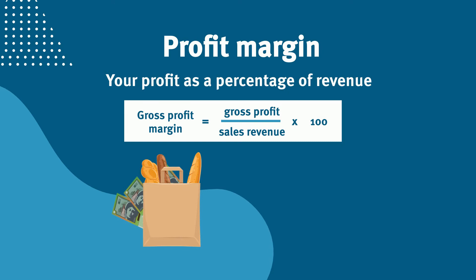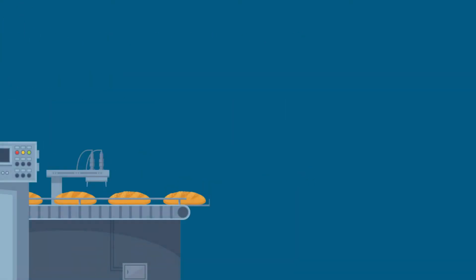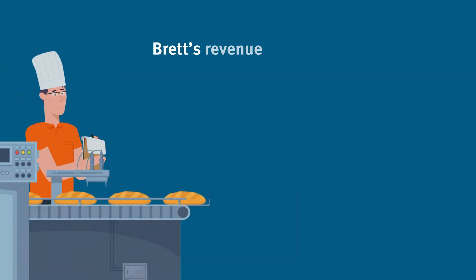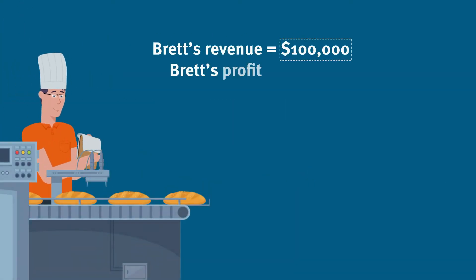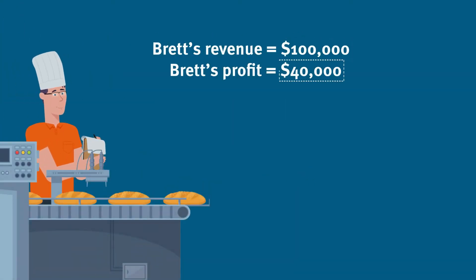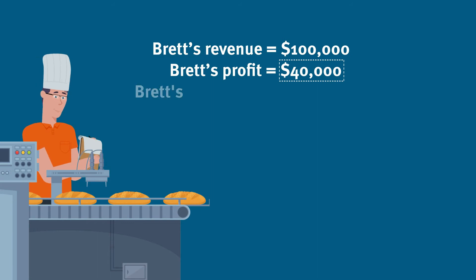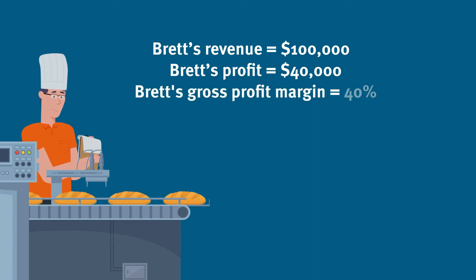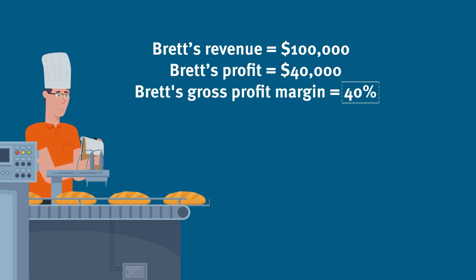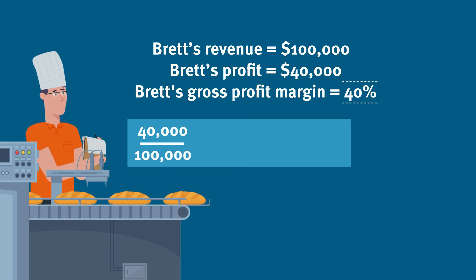covers your cost of goods sold, leaving your business with a gross profit. If Brett has a revenue of $100,000 and a profit of $40,000, then his gross profit margin is 40 percent. This is calculated by dividing $40,000 by $100,000.